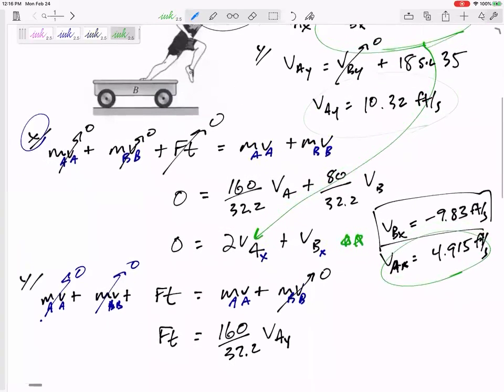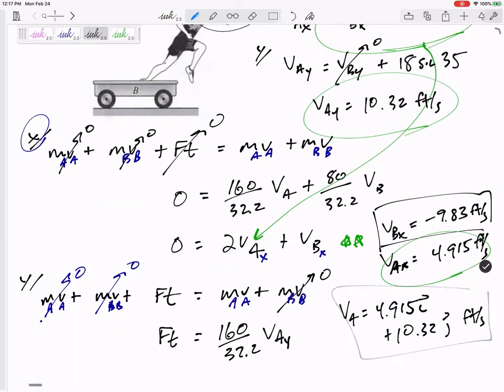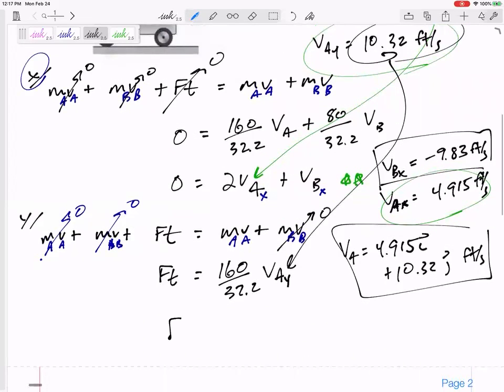So this va/b y is 18 sin 35, which is 10.32 feet per second. Now we can go ahead and answer: what is the velocity, the real velocity of the woman? 4.915 in the i, 10.32 in the j. And then we can solve for the impulse, ft.